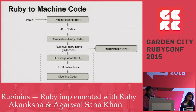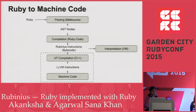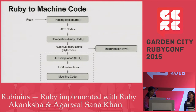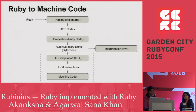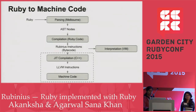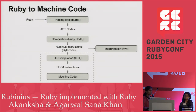Let's see how Ruby code is converted to machine code in Rubinius and how efficiently it is done. We have Ruby code that is fed to the parser in Rubinius, which is the Melbourne parser, the same as in MRI. The parser converts the Ruby code into AST nodes, which are then compiled into Rubinius instructions. The compiler or generator is written entirely in Ruby.